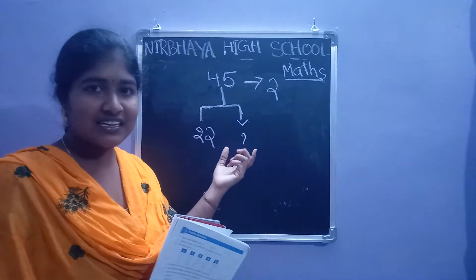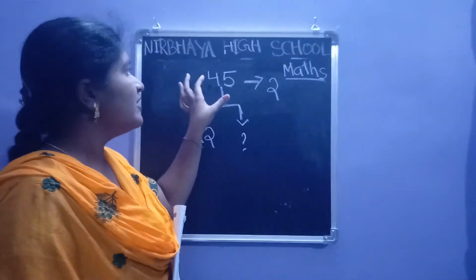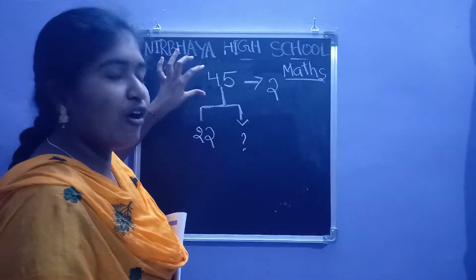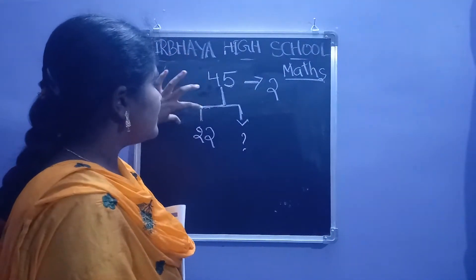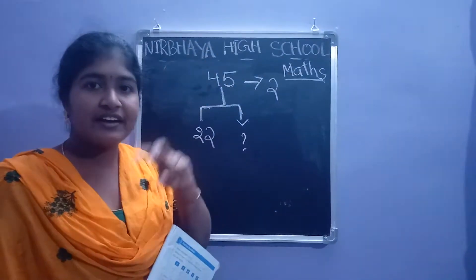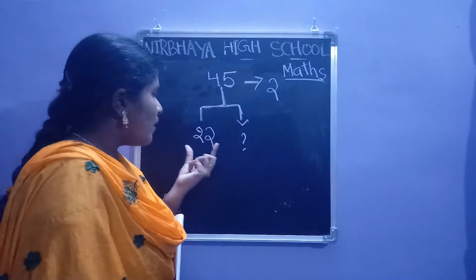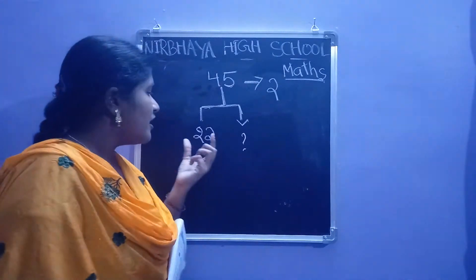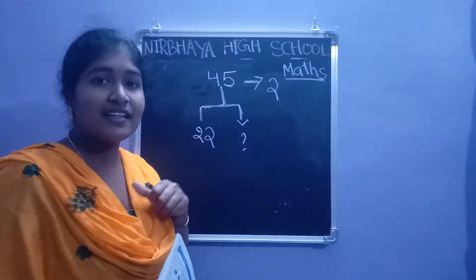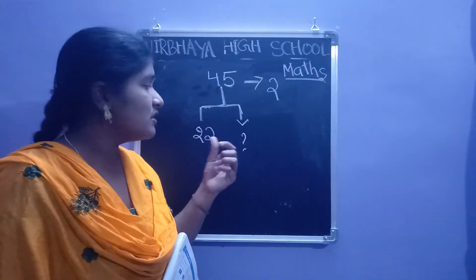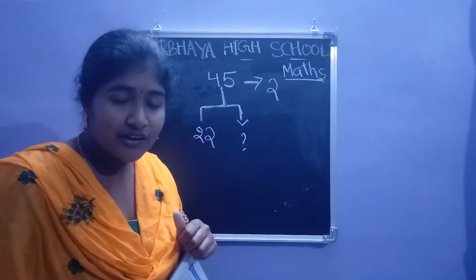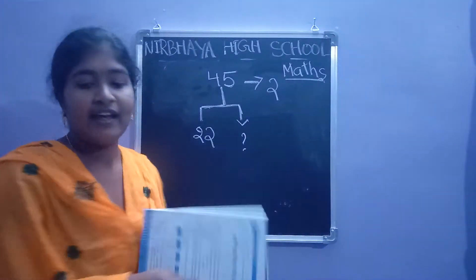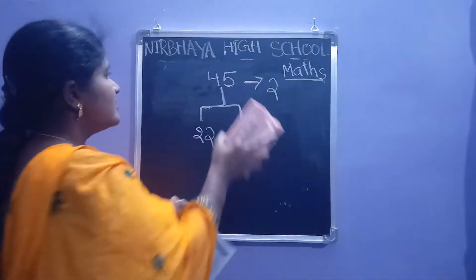Do you understand the sum, children? Total number of students are 45. They are divided into two groups. We have to find the second group's students. Let's do the sum, children.